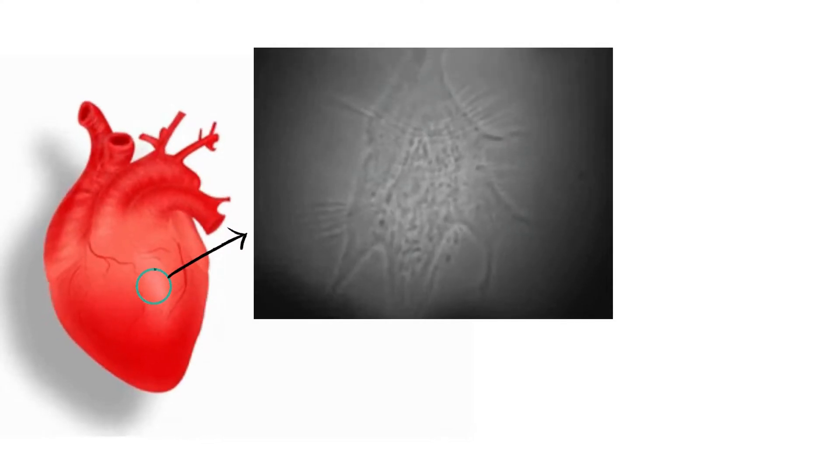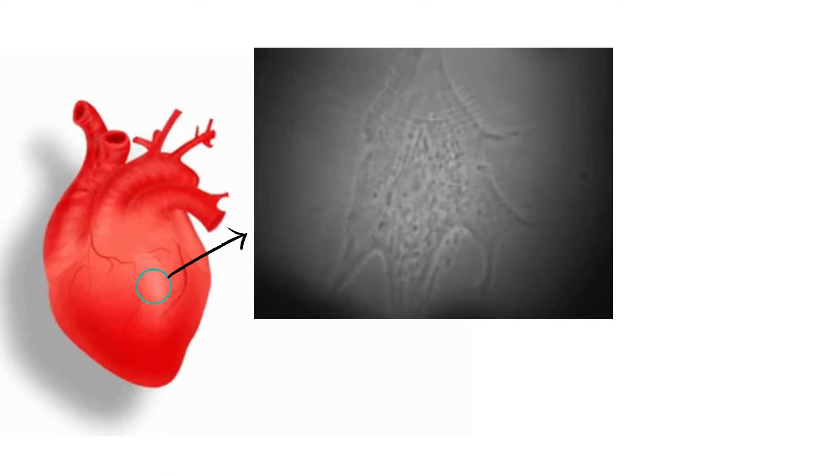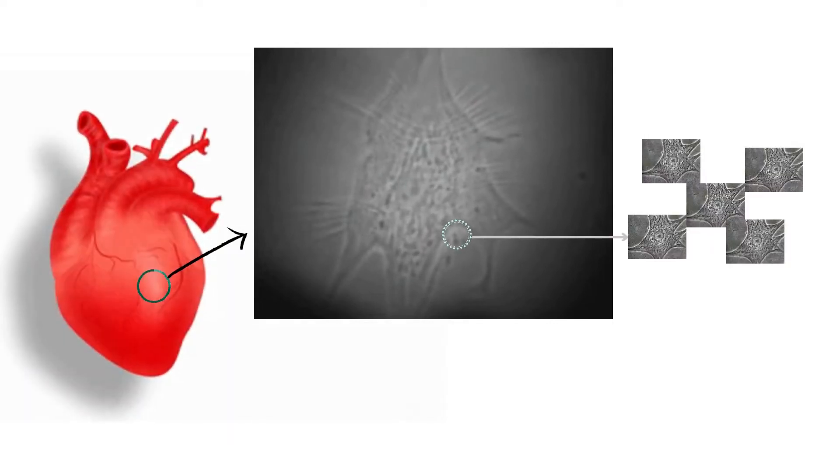Single heart muscle cells spontaneously contract when grown in cell culture. This cell is grown on a flexible rubber substratum. Each time the cell contracts, it pulls on the substratum which becomes wrinkled. Although individual heart cells can beat with their own rhythms, they are coordinated in intact hearts so that all cells beat synchronously.